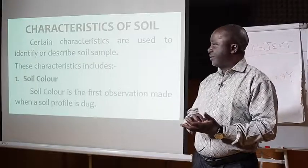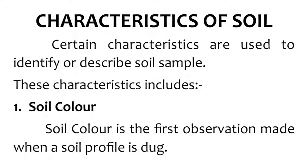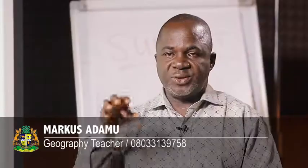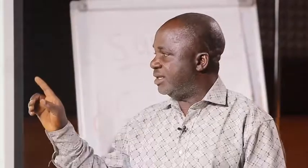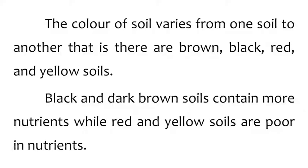What are the characteristics of soil? Certain characteristics are used to identify and describe a soil sample. These include: one, soil color. Soil color is the first observation made when a soil profile is examined. As you dig downward, you will notice different types of soil color. The color of soils varies — we have brown, black, red, and yellow soils. Black and dark brown soils contain more nutrients, while red and yellow soils are poor in nutrients.